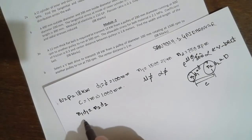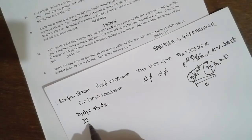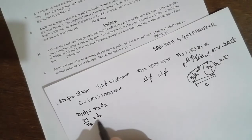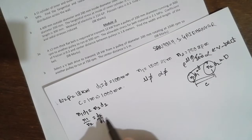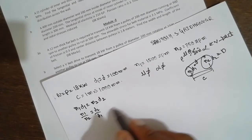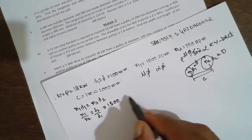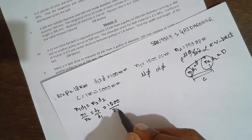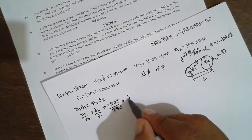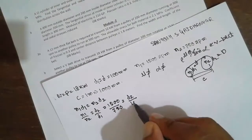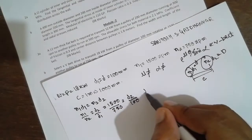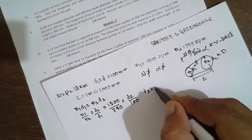N1 divided by N2 is equal to D2 by D1. Substituting: 1500 divided by 750 equals D2 divided by 100. Therefore D2, capital D, is nothing but 200mm.